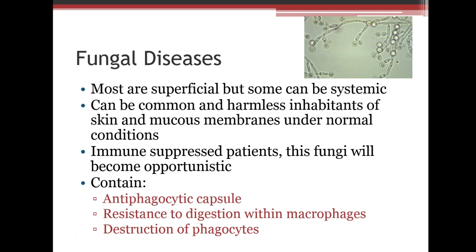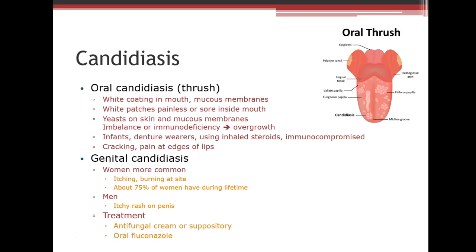The first fungal disease we'll look at is candidiasis. Oral candidiasis, also called thrush, looks like a white coating in the mouth and mucous membranes, but it can also be a yeast on the skin. When we see this overgrow, there's usually an imbalance or an immunodeficiency. In the mouth, it typically affects infants, denture wearers, people using steroids, or immunocompromised patients.